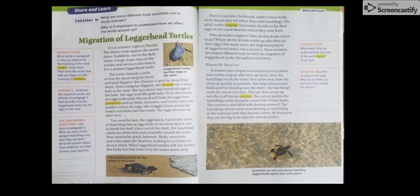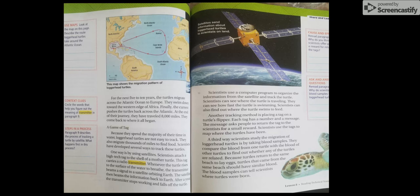For the next five to ten years, the turtles migrate across the Atlantic Ocean to Europe. They swim down toward the western edge of Africa. Finally, the current pushes the turtles back across the Atlantic. At the end of their journey, they have traveled 8,000 miles. They come back to where it all began. A game of tag.